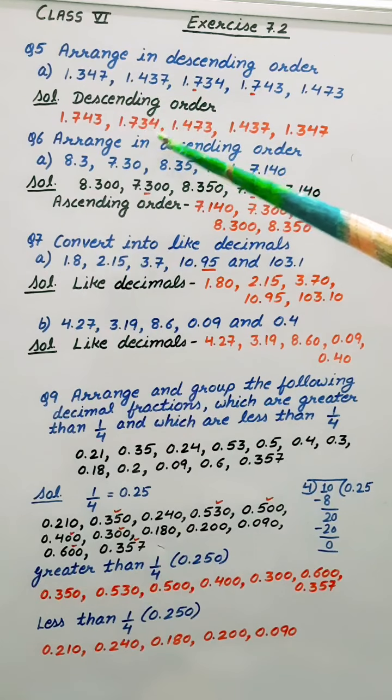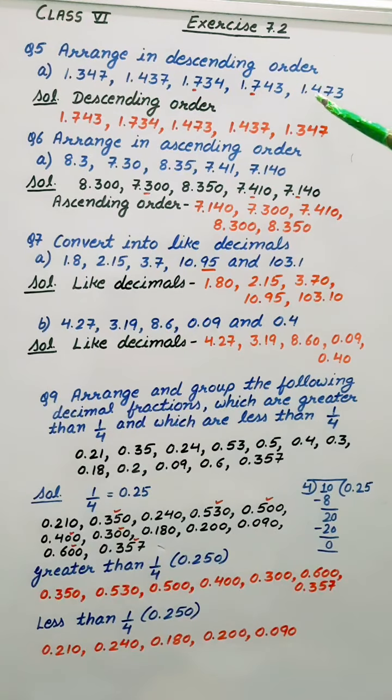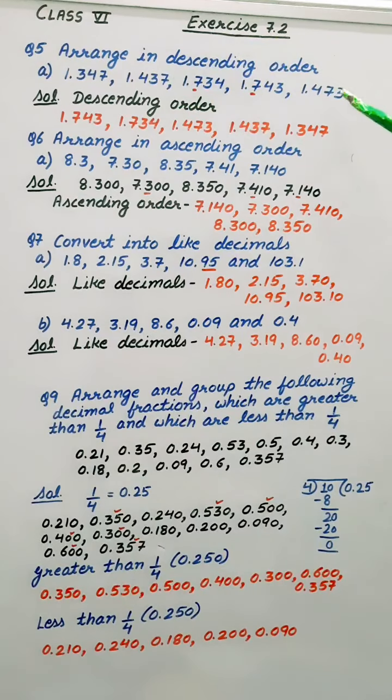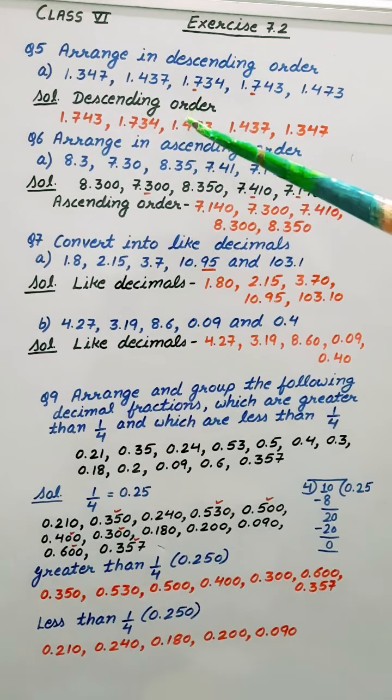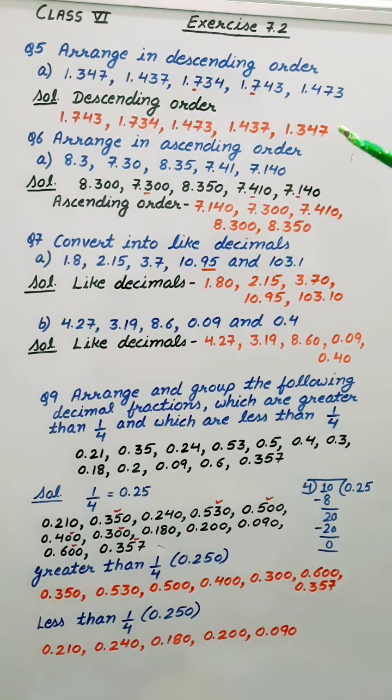Next is this number. After that we have 1.4 here, 1.4 here. After 4 here, 3 here, 7. So this is the next one. After that 1.437 and at last 1.347.